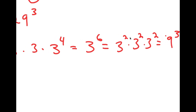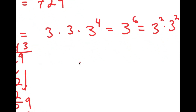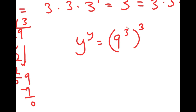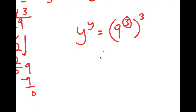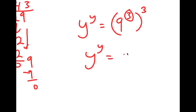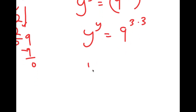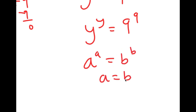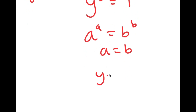So I replace 729 to the power of 3 with 9 to the power of 3 to the power of 3. And 9 to the power of 3 to the power of 3 equals 9 to the power of 3 times 3, and 3 times 3 is 9. So I get y to the power of y equals 9 to the power of 9. Using the property that if a to the power of a equals b to the power of b then a equals b, I conclude y equals 9.